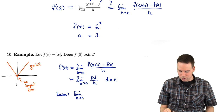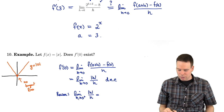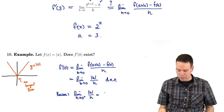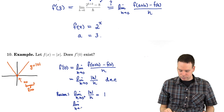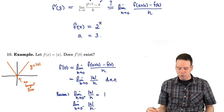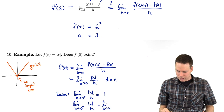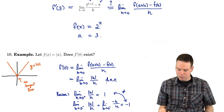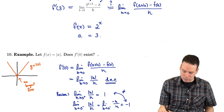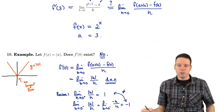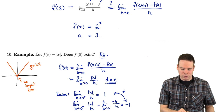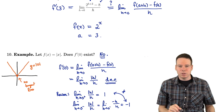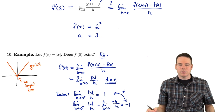The left and right-hand limits are not equal — 1 ≠ −1 — so the general two-sided limit does not exist. Therefore the derivative doesn't exist at 0. Does the derivative exist? No. Geometrically we knew why from the intuitive idea of a tangent line. Now, using the definition of derivative involving the limit, we can prove it doesn't exist by showing the limit doesn't exist.